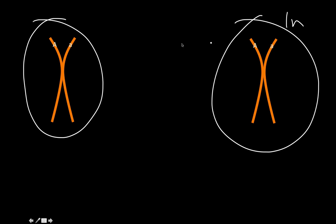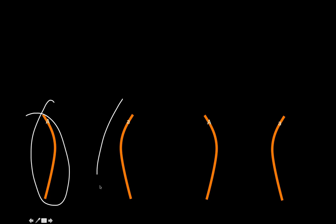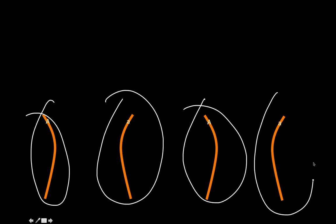We have two copies of the exact same chromosome, and through meiosis these chromosomes will separate in meiosis one, giving us haploid cells — cells that have one copy of each chromosome. In meiosis two, these chromosomes will separate into individual chromatids, so each cell is a gamete. They're still haploid, but there's one chromatid for each chromosome in the cell.